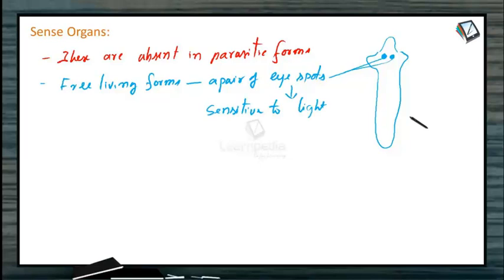Usually, free living flatworms show negative phototaxis. That means they move away from high intensity light.